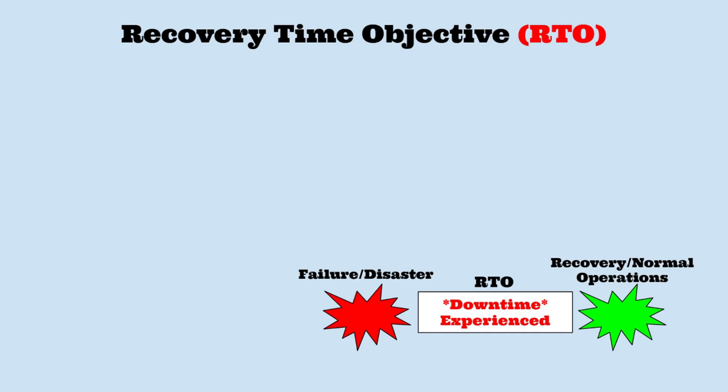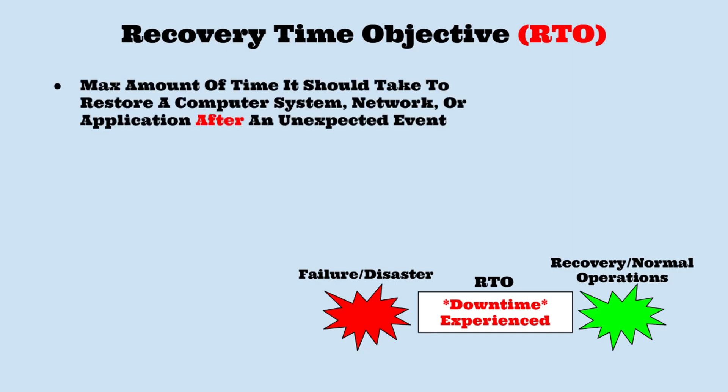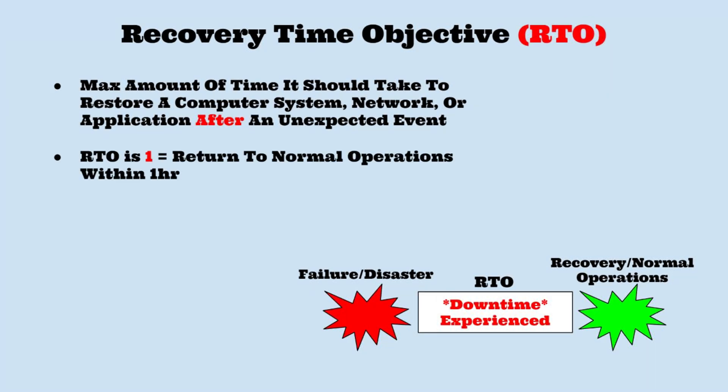A recovery time objective is the maximum amount of time it should take to restore a computer, network, or application after an unexpected disaster. An RTO focuses on the procedures that occur after the failure, not before. For example, if your organization's RTO is one hour, then you should be able to get up and running to normal procedures within an hour time frame.